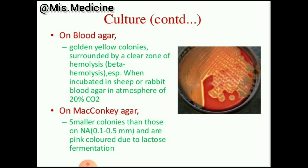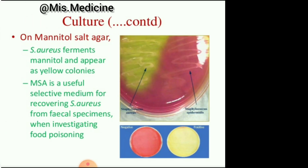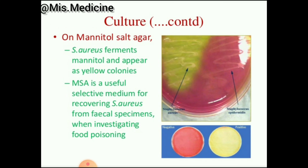On blood agar, golden yellow colonies are surrounded by a clear zone of hemolysis, which is beta hemolysis, when incubated in sheep or rabbit blood agar in an atmosphere of 20% carbon dioxide. On MacConkey agar it shows smaller colonies than those on nutrient agar and they are pink in color due to lactose fermentation.